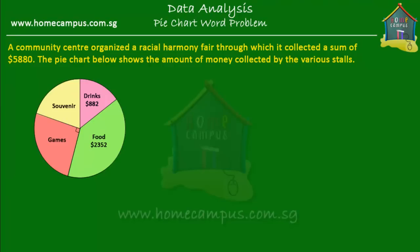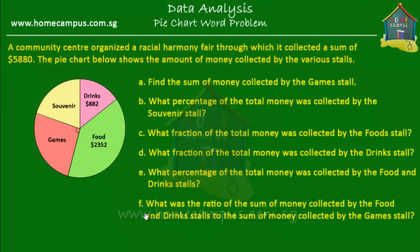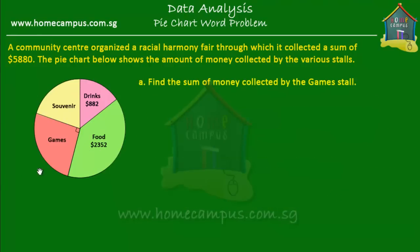We have about six questions related to this pie chart and we'll solve them one by one. The first question says: find the sum of money collected by the game stall. We've got to find out what the value of that stall is. There's a hint — a right angle mark on the slice of the pie.